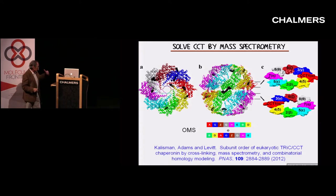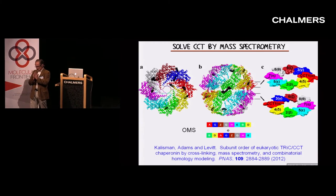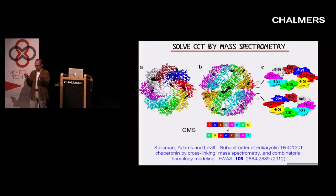What we wanted to do was to say: okay, we could get the structure of this correctly by mass spec, but could we have gone back to the crystallography and done it by exactly the same combinatorial approach?